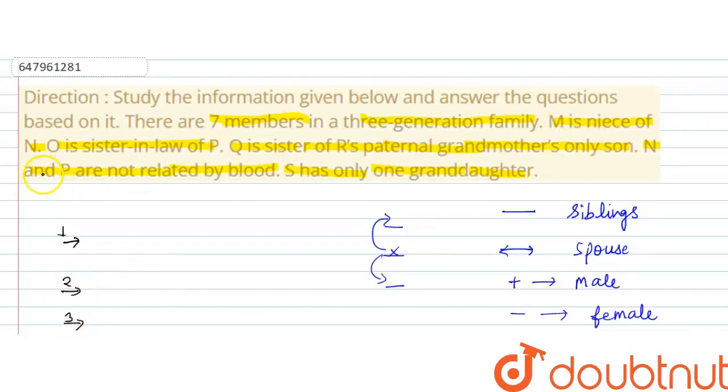M is niece of N. M is brother or sister's daughter. Next, O is sister-in-law of P. Next, Q is sister of R's paternal grandmother's only son.